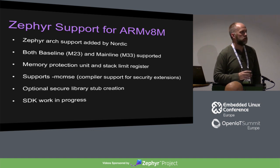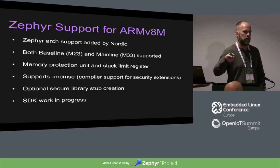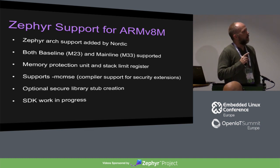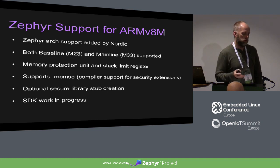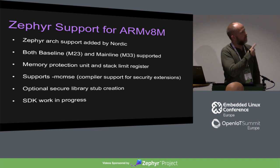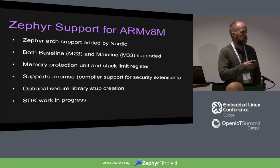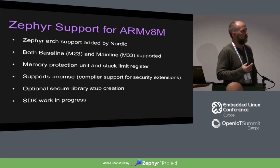The MCMSE option is needed to create veneers and security features because they added an extra linker region called the secure non-secure callable. When you do transitions from non-secure to secure, you have wrappers built in that area to jump into the secure execution environment. There's also secure library stub creation supported in Zephyr. When running a non-secure and secure image and you want to call secure functions, you create a stub that allows progression across the boundary. You have choices for what your secure code is: TFM, Zephyr itself, or your own implementation.